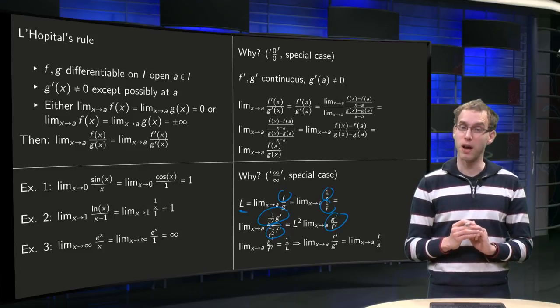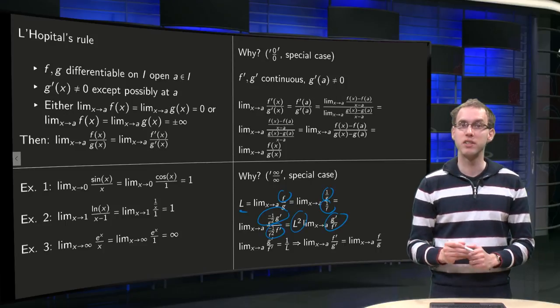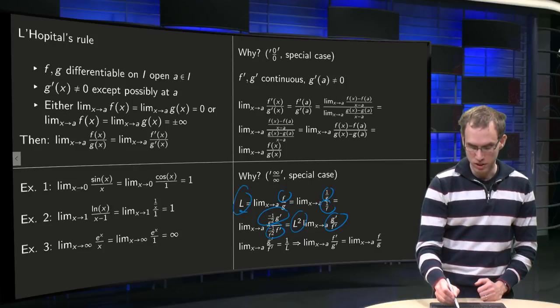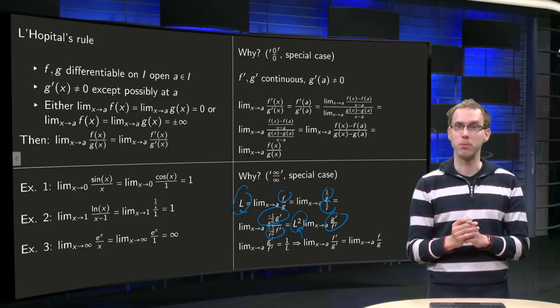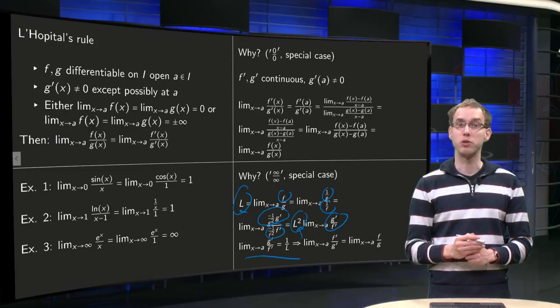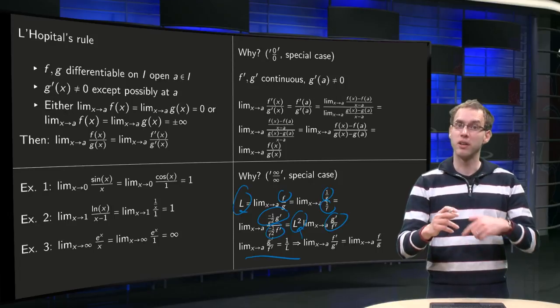Well the f squared over g squared yields L squared in the limit. So what do we get? If our L equals our L squared times some limit. So our limit has to be equal to 1 over L. And then assuming that L is non-zero we can turn it around.